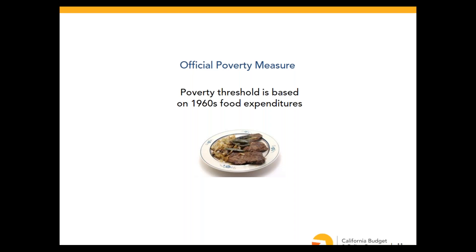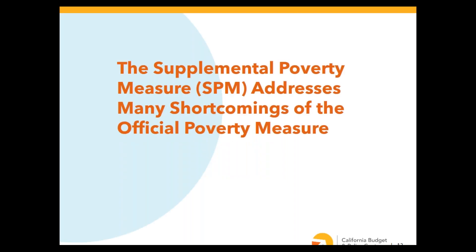The official measure is widely considered to be an inadequate measure of poverty. Because of this, the Census Bureau and the Bureau of Labor Statistics developed the Supplemental Poverty Measure, which addresses many of the shortcomings of the official measure. I'll walk through exactly how the official measure works and then show how the supplemental measure improves upon it.